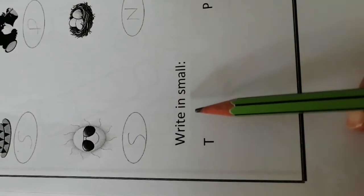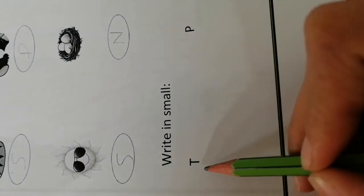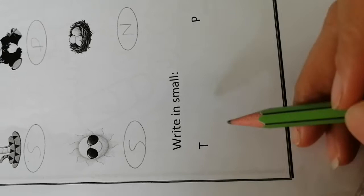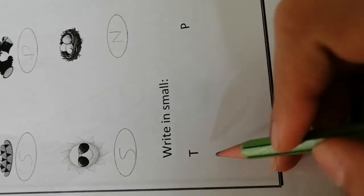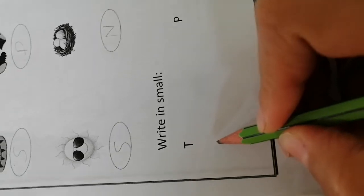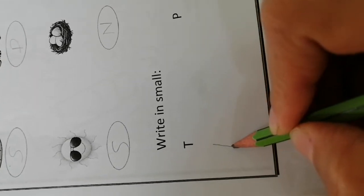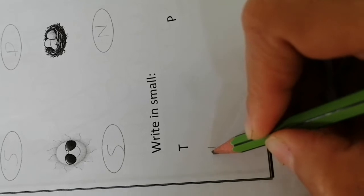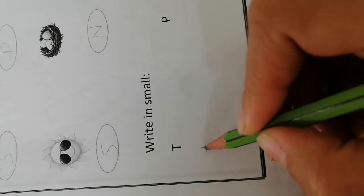Here, write in small. Yes. What is this? Capital T. Okay. How can you write a small T? Stick down, small dash.